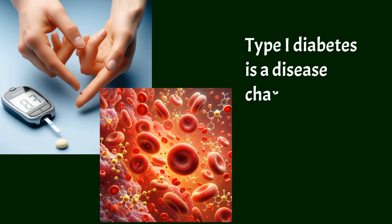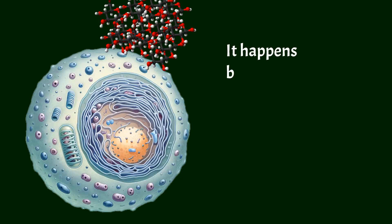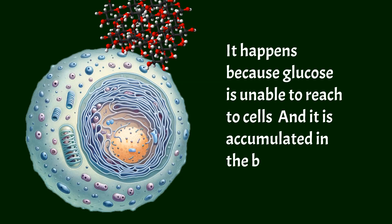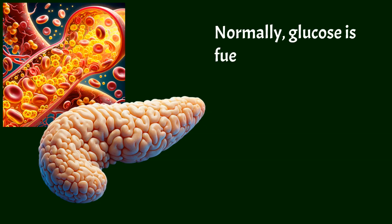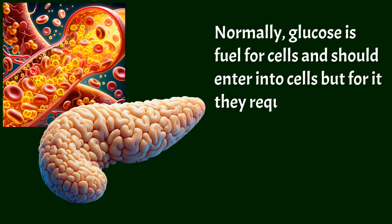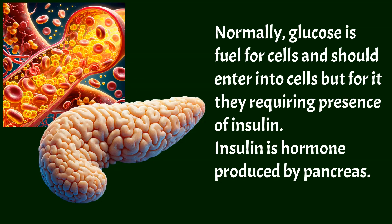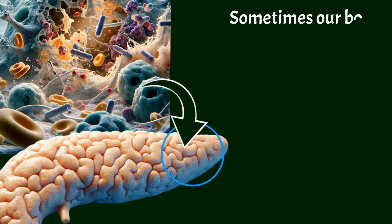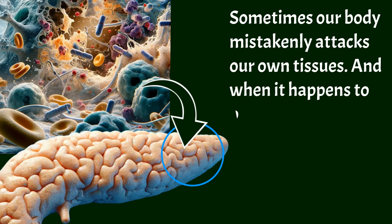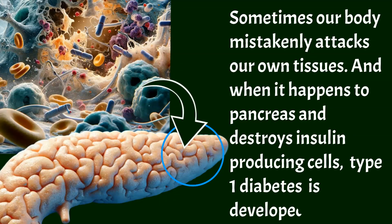Type 1 diabetes is a disease characterized by high blood sugar levels. It happens because glucose is unable to reach cells and accumulates in the blood. Normally, glucose is fuel for cells and should enter into cells, but for that they require the presence of insulin, a hormone produced by the pancreas. Sometimes our body mistakenly attacks our own tissues, and when it destroys the insulin-producing cells of the pancreas, type 1 diabetes is developed.